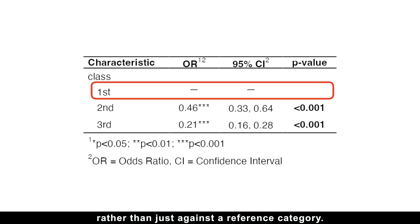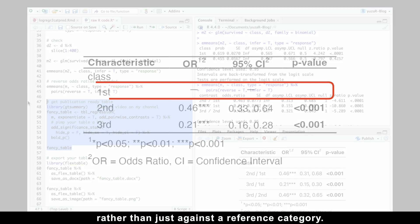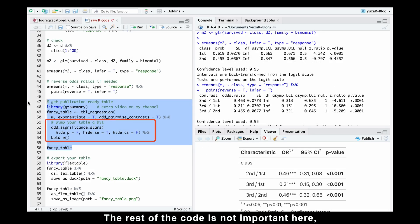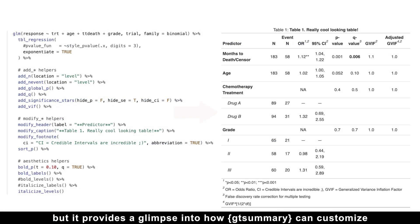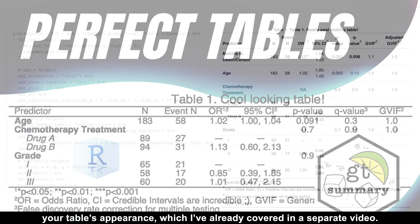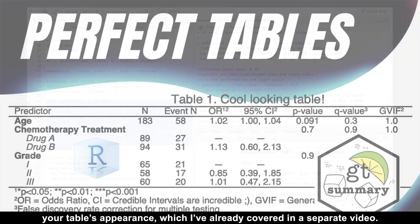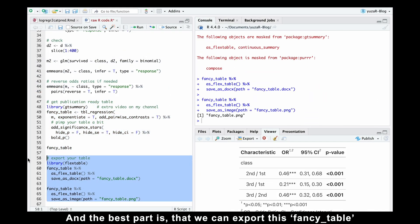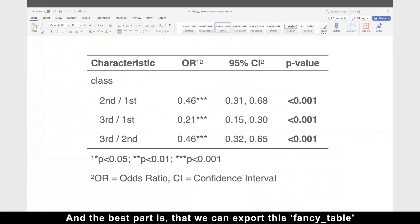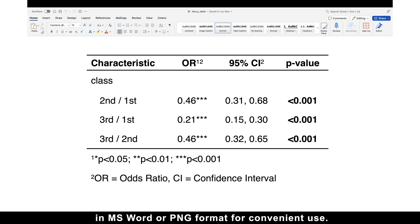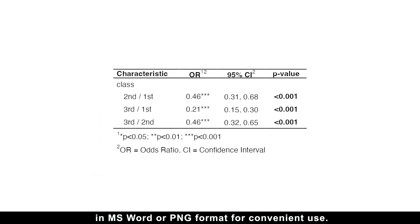The rest of the code is not important here, but it provides a glimpse into how gtsummary can customize your table's appearance, which I've already covered in a separate video. And the best part is that we can export this fancy table in Microsoft Word or PNG format for convenient use.